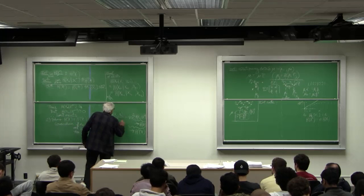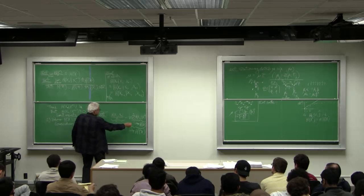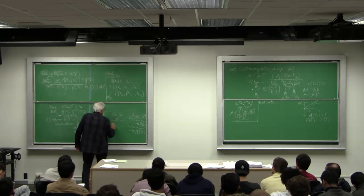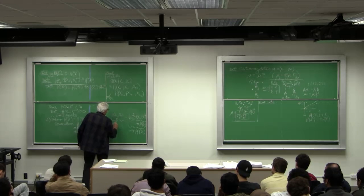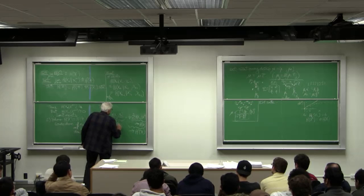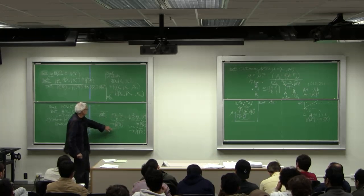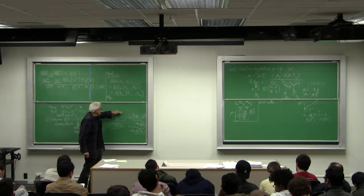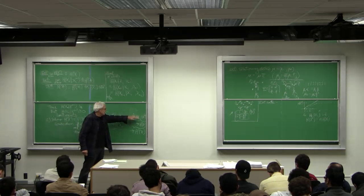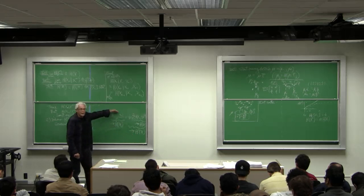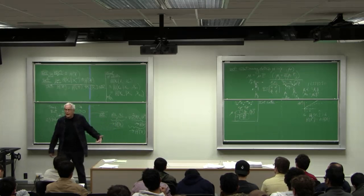But this now has a limit, but this limit we've defined as h of x, of the process x. So the limit of this is the limit of this, which is h prime, but the limit of this was what we were calling h.